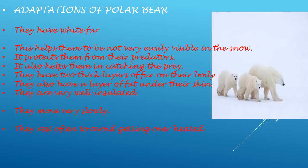As you can see in the picture, polar bears have white fur — long hair-like outgrowth on their body. This helps them to not be very easily visible in the snow. Since they are white in color and walk through the white snow, they are not easily visible, which protects them from predators and also helps them in catching prey. They have two thick layers of fur on their body and also a layer of fat under their skin, so they are very well insulated.